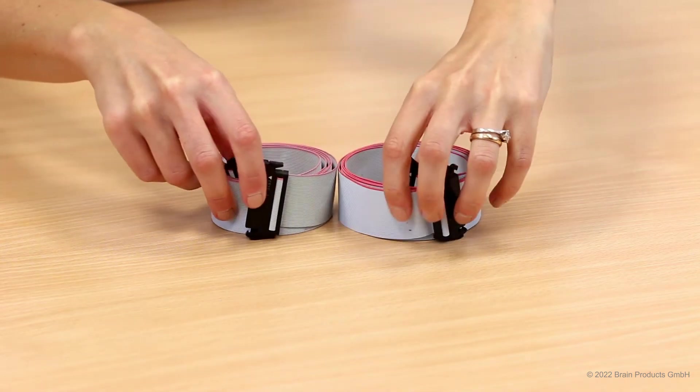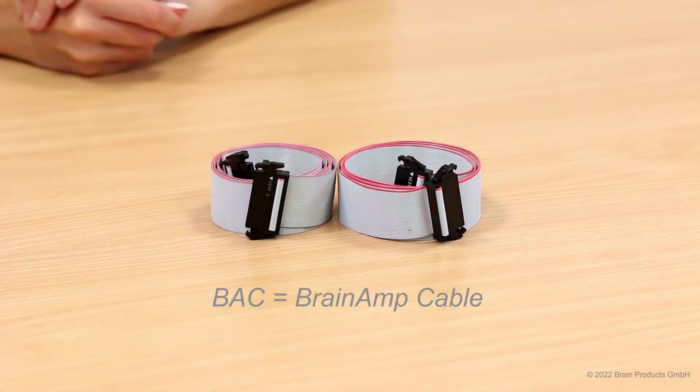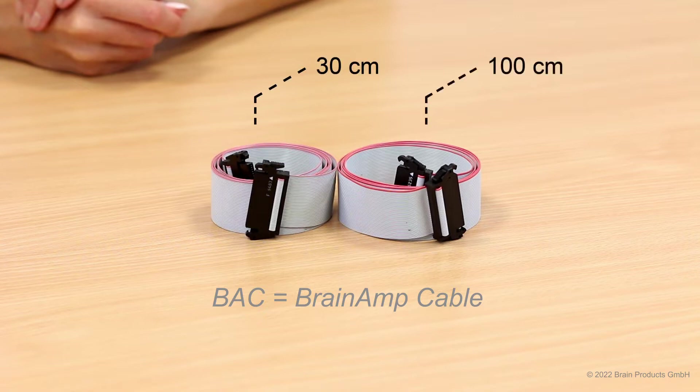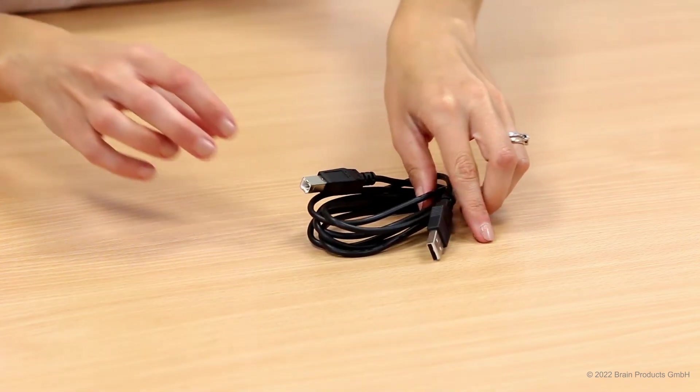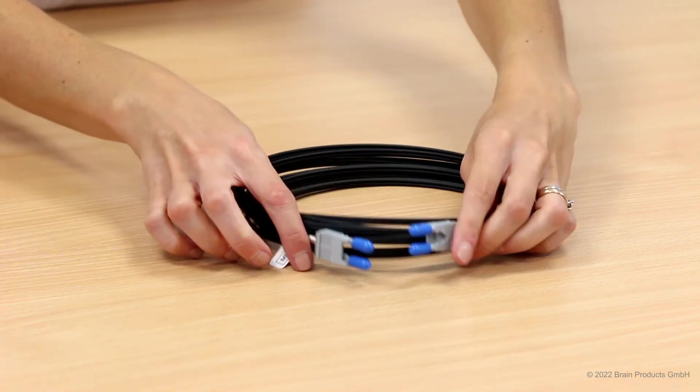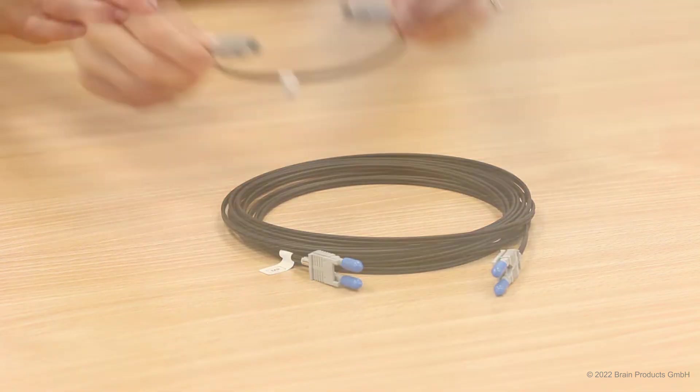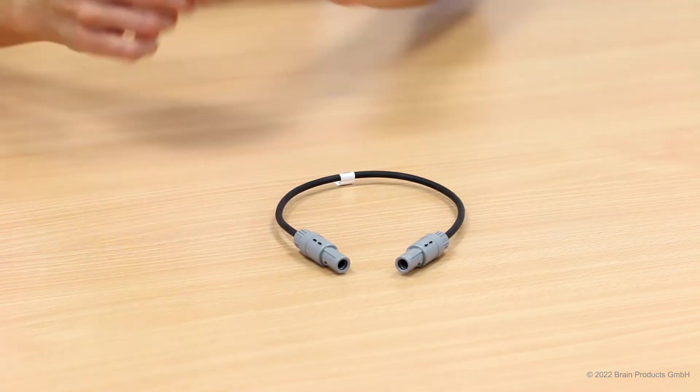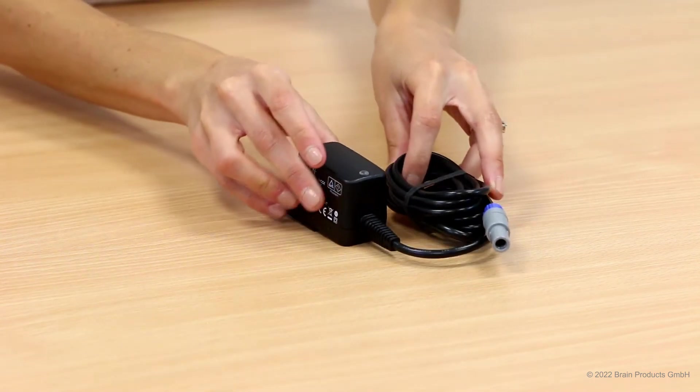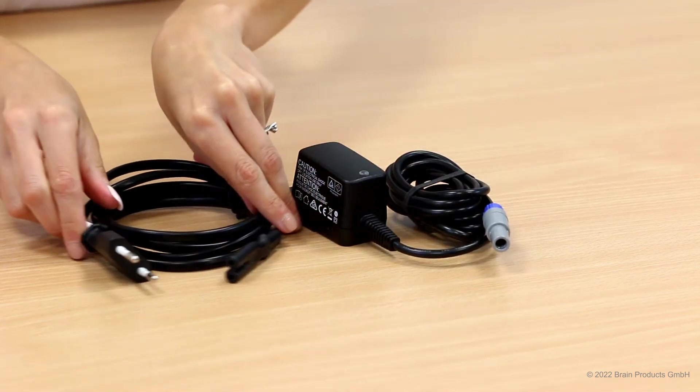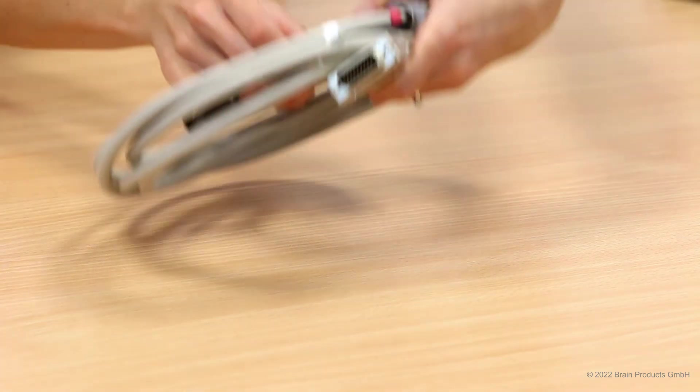Two flat ribbon cables, often called BAK cables. One is 30 cm and one is 100 cm long. Both are equipped with 50 pin connectors. A USB cable, a fiber optic cable, a power pack cable, a charger for the power pack, and a trigger cable.